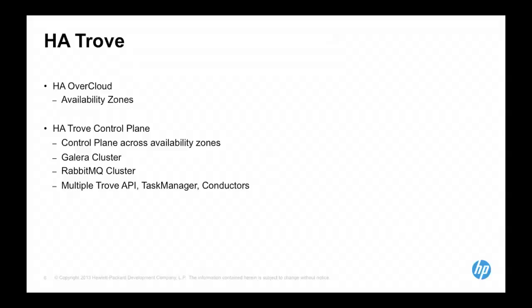To get to an HA Trove, you need support for running HA workloads. We accomplish that through availability zones — not just tags on hosts, but physical separation of servers across a data center. We run the Trove control plane across all availability zones. We run a Galera cluster, which allows us to lose a minority number of nodes and still have the service running. We also run a RabbitMQ cluster in mirrored mode, providing all the RabbitMQ IPs to Trove so that using the Oslo messaging framework it picks the right one. We run multiple API processes, multiple task manager processes, and the conductor, scaling them independently.